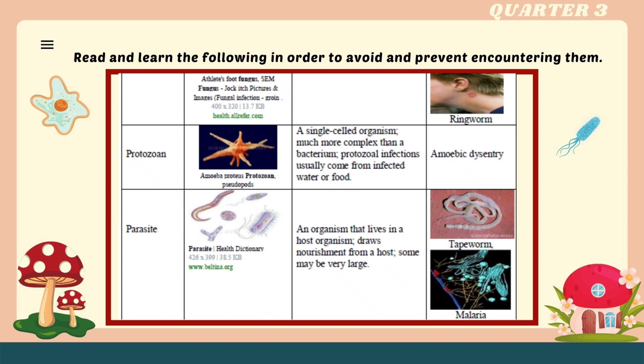Protozoa: a single-celled organism much more complex than a bacterium. Protozoa infections usually come from infected water or food. Example: amoebic dysentery. Parasite: an organism that lives in a host organism and draws nourishment from the host. Some may be very large. Examples include tapeworm and malaria.